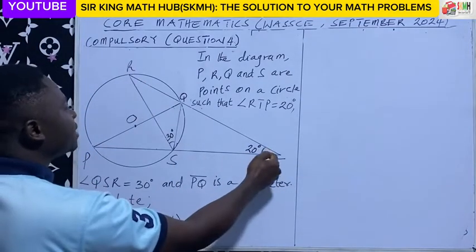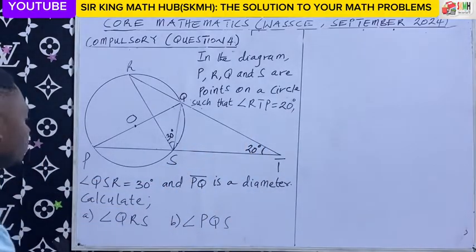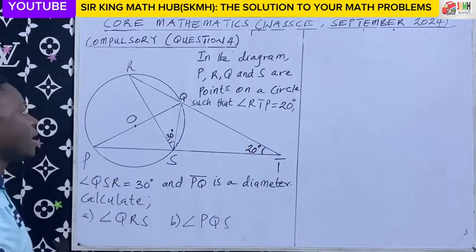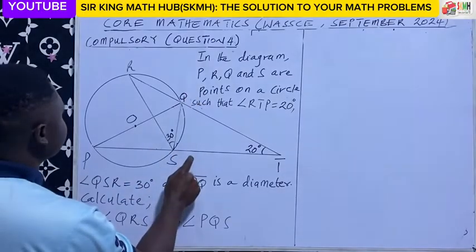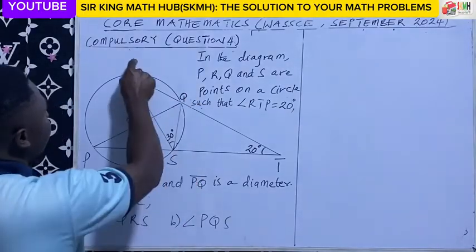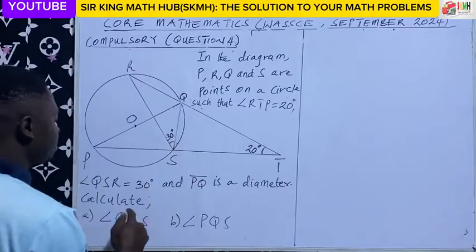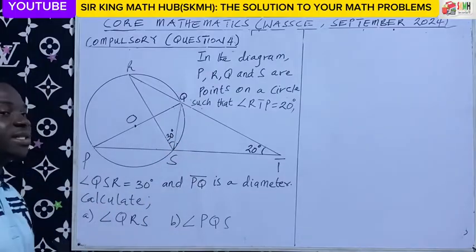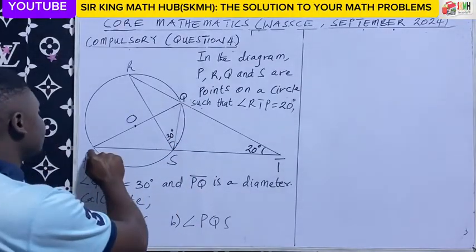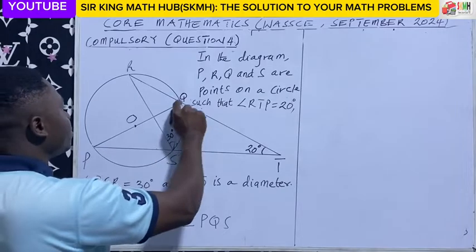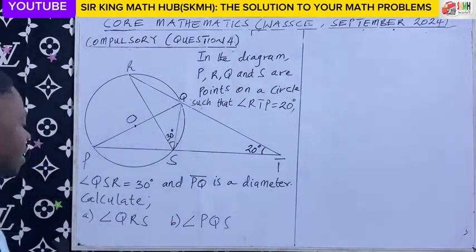So you are looking at this angle — angle RTP measures 20 degrees, as you can see. Again, angle KOSR — this angle measures 30 degrees. And the line PQ, this straight line here, is a diameter.